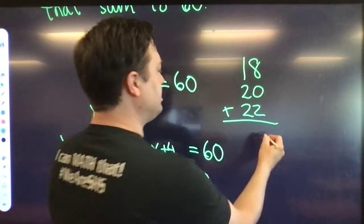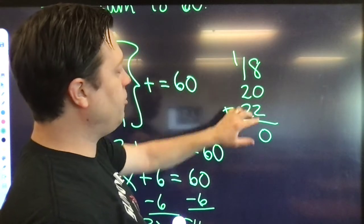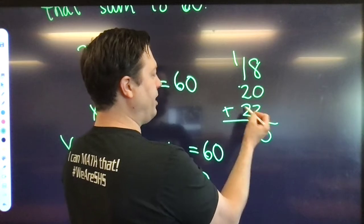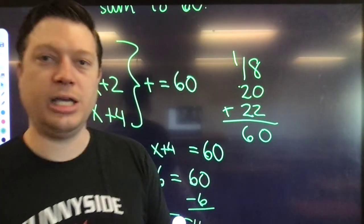8 plus 2 is 10, carry the 1. 1, 2, 3, 4, 5, 6. You know, they count the ends of the number trick, right? So 1, 2, 3, 4, 5, 6. Yes, it is actually 60.